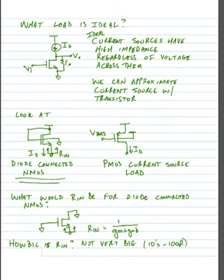So tens to hundreds of ohms. And we need something larger to achieve high gain. We'll look at the PMOS current source load in the next slide.